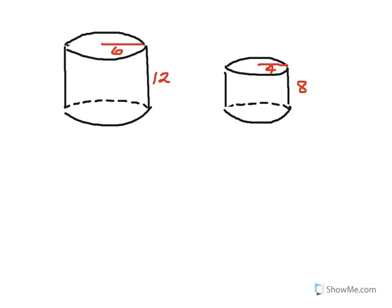A first example might be looking at two cylinders. The cylinder on the left has a radius of 6 and a height of 12. On the right we have a radius of 4 and a height of 8. Now, the bases are similar because the bases of cylinders are circles, and all circles are similar.